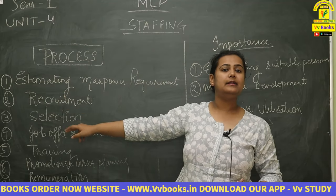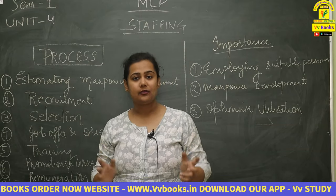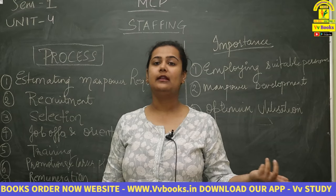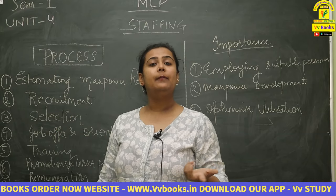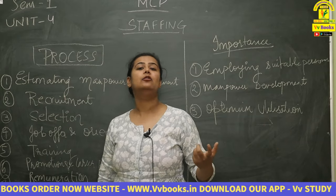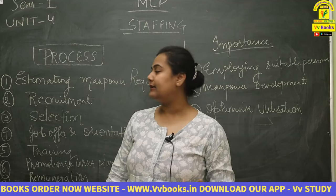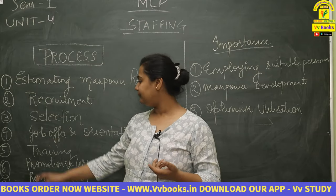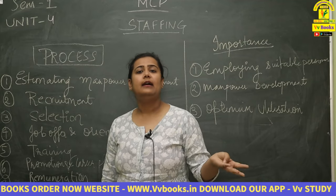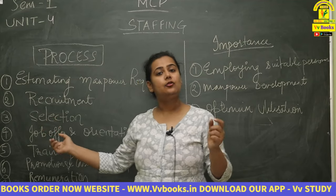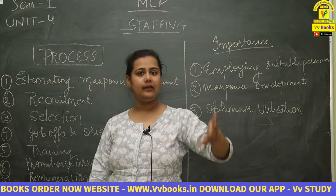The next step is selection. Recruitment may bring in 800 applicants for 80 job positions. The number of people rejected is always greater than the number selected, which is why selection is known as a negative process. Selection involves a written exam, interview, and background check. After selection, we give the selected candidates a letter: congratulations, you are selected for this job position, here is your salary and various terms and conditions — this is the job offer.